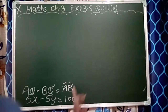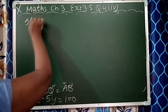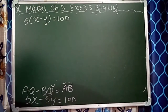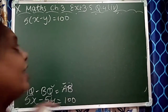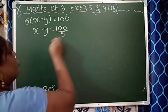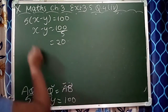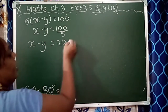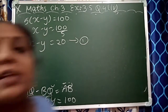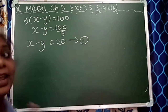Here I have written: 5x minus 5y equals 100. Taking 5 common: 5(x minus y) equals 100, so x minus y equals 100 upon 5, which gives x minus y equals 20. This is our first equation.